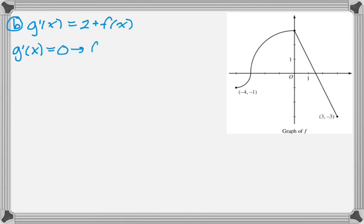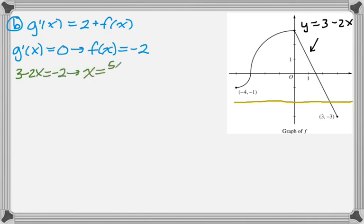So I need the derivative to be 0. Or undefined, but the derivative is defined everywhere. So I need this to be true. So I'm going to add that line to my graph. This is a pretty common new theme it would seem on the AP exam, adding little lines to graphs and reasoning about it. I know that that equation is 3 minus 2x. So f of x equals negative 2 is the same as 3 minus 2x equals negative 2. And that gives me 5 halves for my critical point.